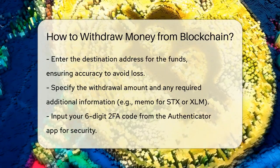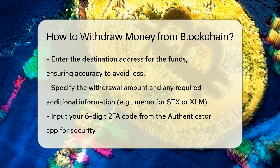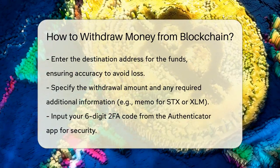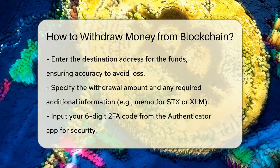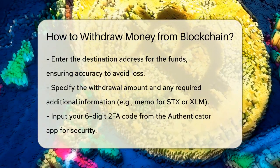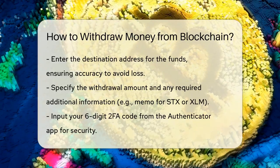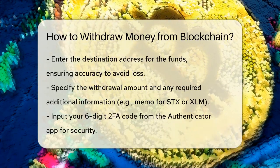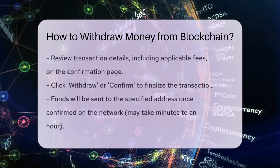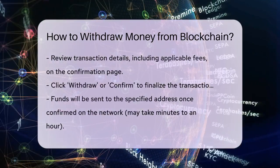Enter the amount you want to withdraw and any additional information required, such as a memo for certain cryptocurrencies like STX or XLM. Don't forget to enter your six-digit 2FA code from your authenticator app for security. Review the transaction details carefully, including any fees that will be deducted. Fees are a part of every cryptocurrency withdrawal and will be shown on the confirmation page.